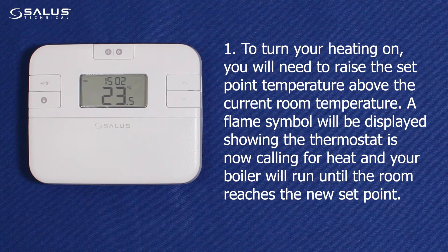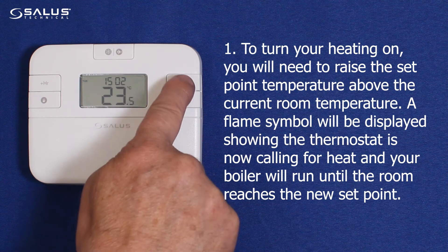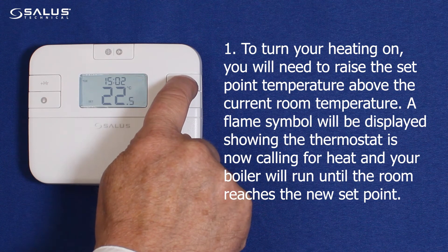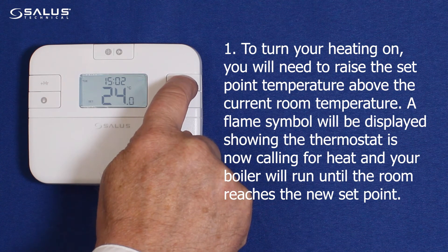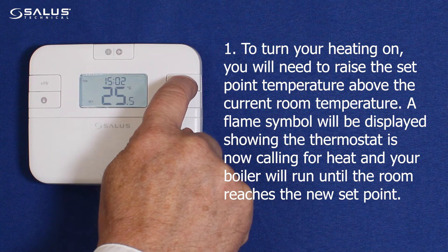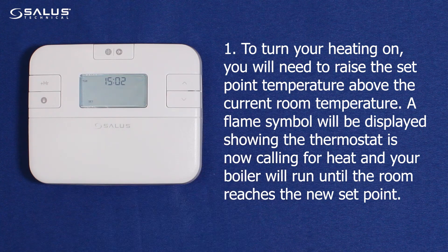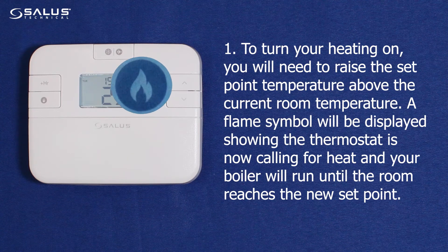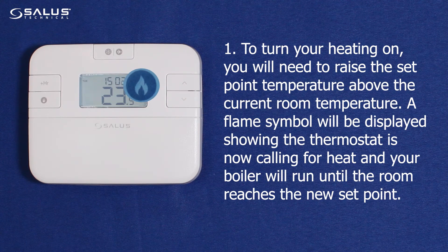1. To turn your heating on, you will need to raise the set point temperature above the current room temperature. A flame symbol will be displayed, showing the thermostat is now calling for heat, and your boiler will run until the room reaches the new set point.